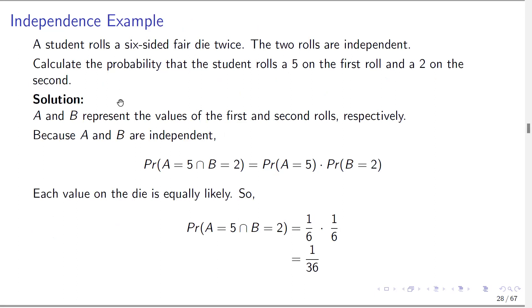Here's an example of the concept of independence. A student rolls a six-sided fair die twice. The rolls are independent — if I roll my first die and get a five, how does that affect the outcome of the second roll? It doesn't affect it in any way. So calculate the probability that the student rolls a five on the first roll and a two on the second roll.